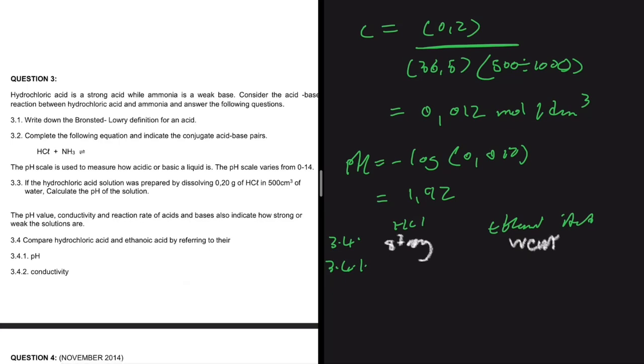Let's compare the pH of HCl and ethanoic acid. Obviously the pH of HCl will be lower than the pH of ethanoic acid. So we can say that HCl has a lower pH, it has a lower pH compared to ethanoic acid.